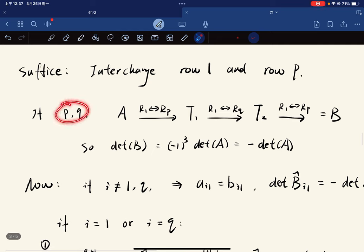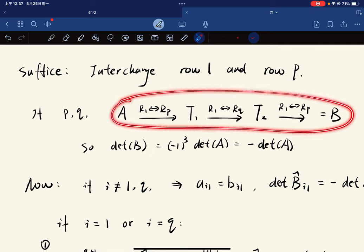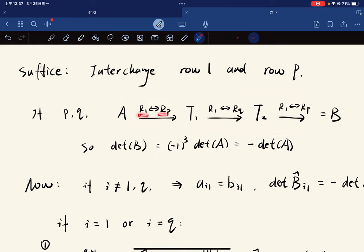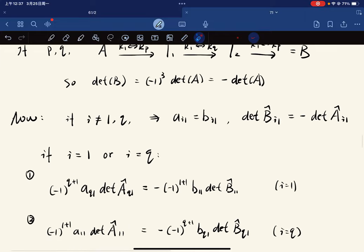Now it's sufficient to interchange row one and row p. Why? Because if we interchange p and q, we consider this. You change one and p, and then you change one and q, and then again you change one and p. So basically you're changing p and q. So there are three times. If we show this is true, then it's like negative one to the power of three, which is still negative. So we're good.